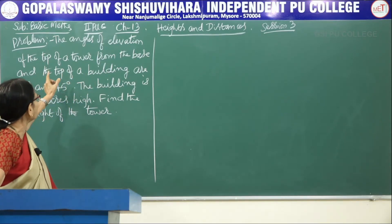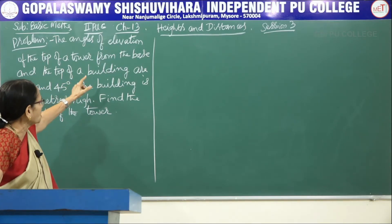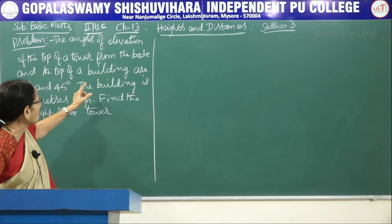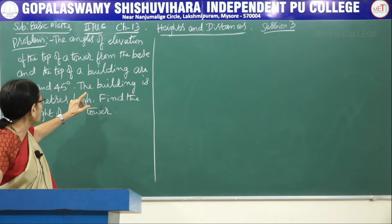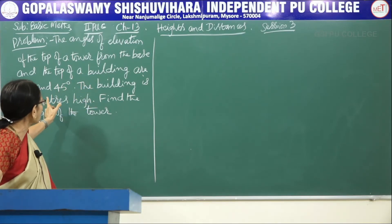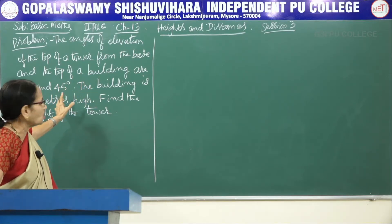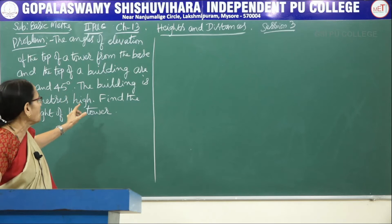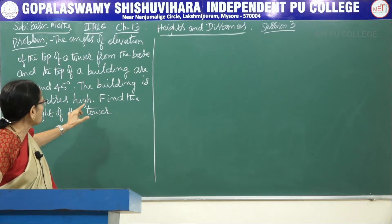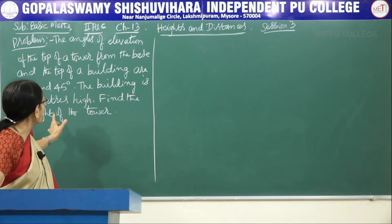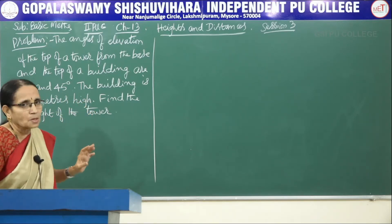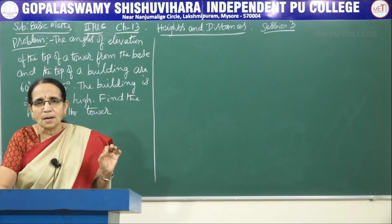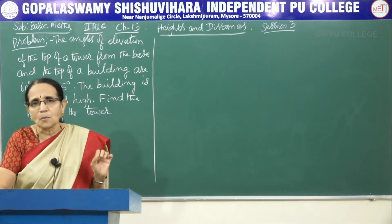The angles of elevation of the top of a tower from the base and the top of a building are 60 degrees and 45 degrees respectively. The building is 20 meters high. Find the height of the tower. Now there is a building and there is a tower.